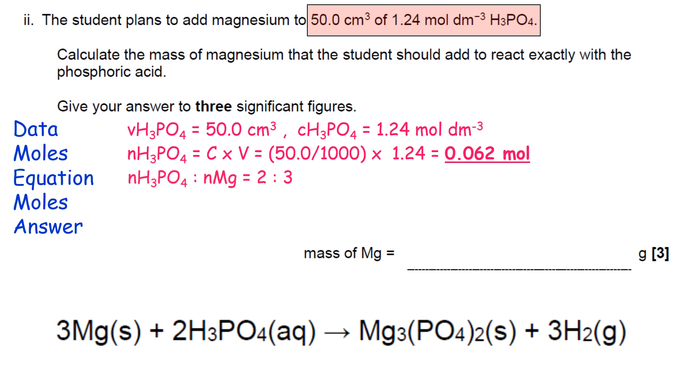And you can see from the equation, it's a 2 to 3 mole ratio between phosphoric acid and magnesium. So multiplying the phosphoric acid moles times 3 over 2 gives you 0.093.